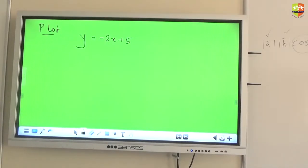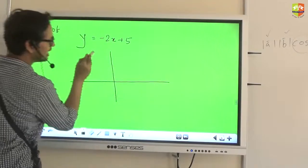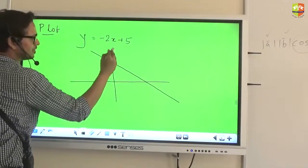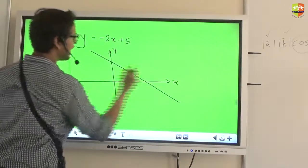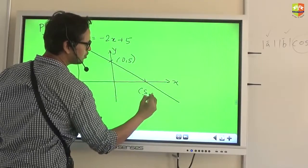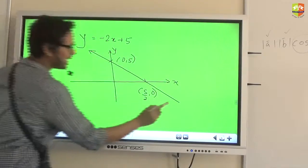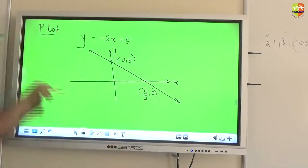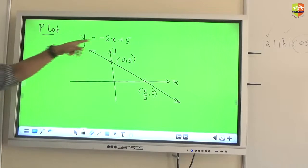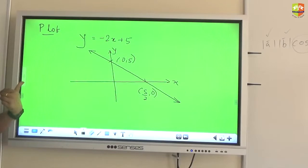Fine. Done? So it will be basically a line like this. Okay. Where it will cut the y axis at 0,5. X axis will be cut at 5 by 2, 0. Okay. Please make arrows to signify that this line is extending indefinitely in all the directions. Yes. Yes. Such a relation of a line, or such a relation representing a line, is it eligible to be called a function?